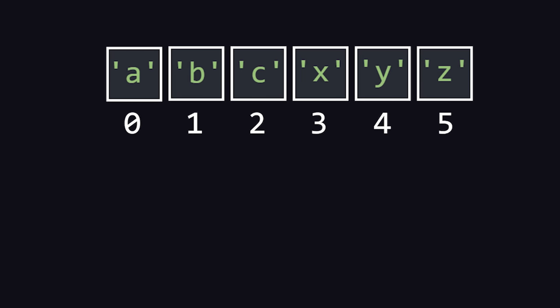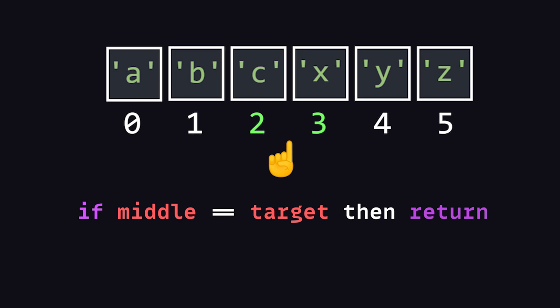First, we need to figure out the middle index. Instead of starting at index 0, we start in the middle. If it's equal to the target, then we return that index.